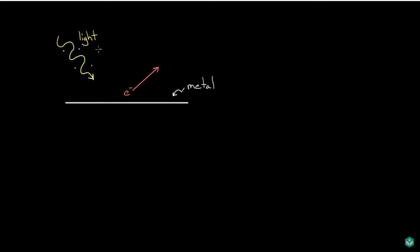In other words, light was only giving energy in certain bunches equal to something called Planck's constant multiplied by the frequency of the light. It either gave all of this energy to the electron, or it gave none of the energy to the electron — never half and half. It was sort of all or nothing.